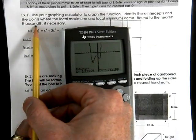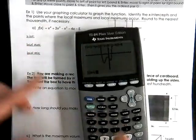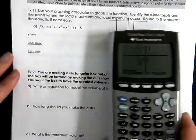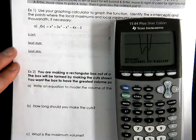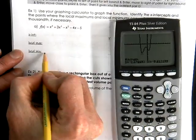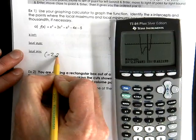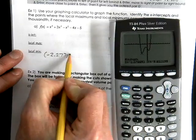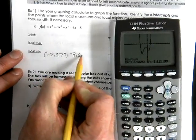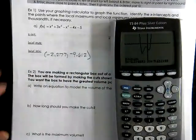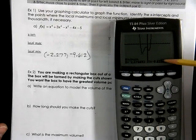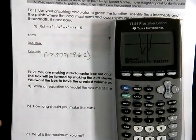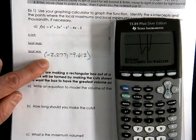So our local minimum is negative 2.277 comma negative 9.612. A lot of times we're probably talking about a y value. Just the y value. But we're also talking about a location.